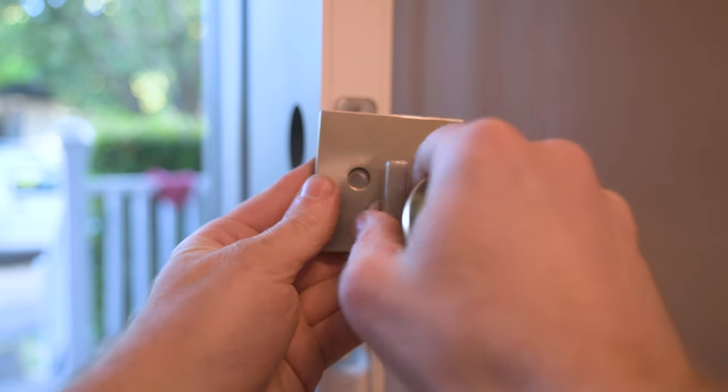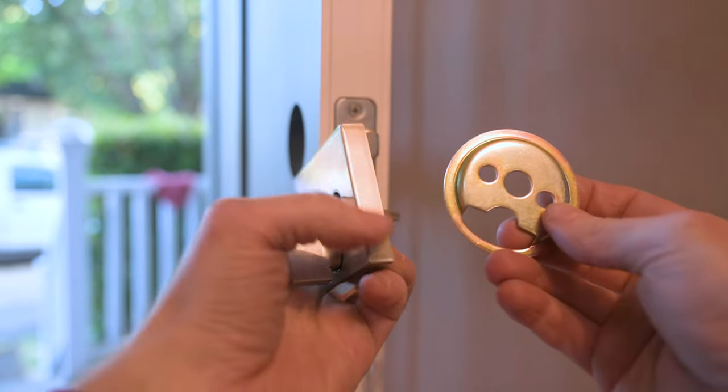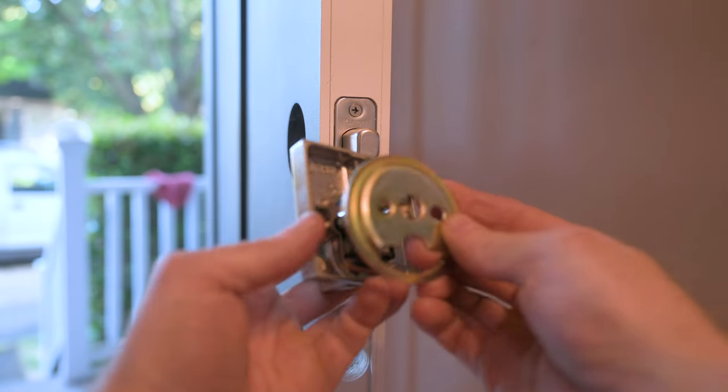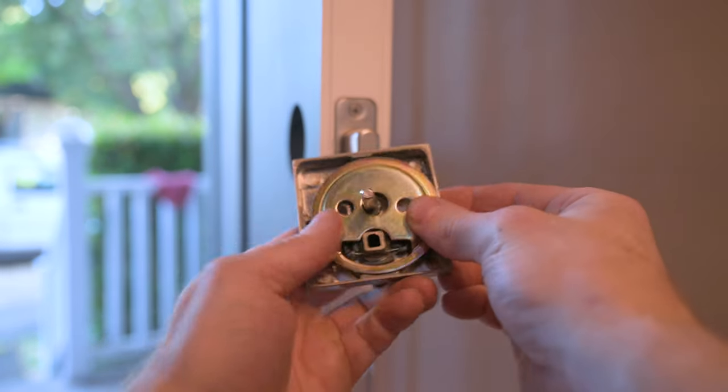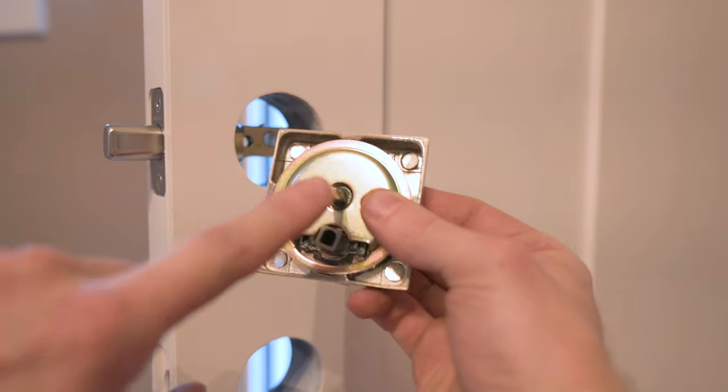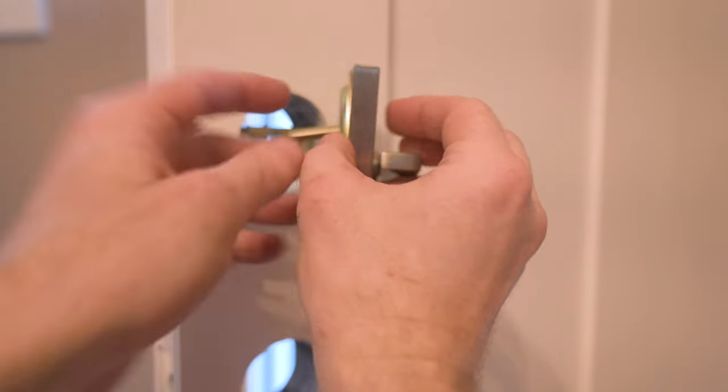So now make sure the turn piece is vertical. And this mounting plate goes over the back of it like this. So now we want this, the torque blade, to go right through the latch cam.